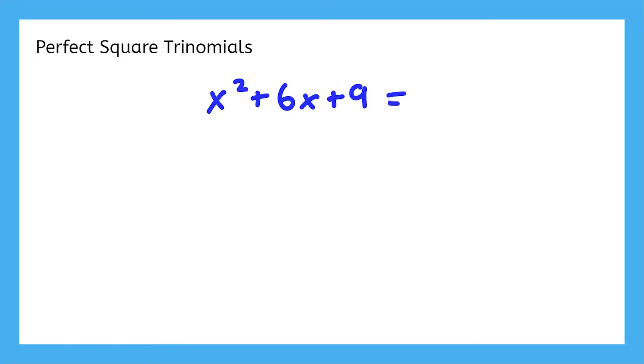Remember in the last unit when we learned about perfect square trinomials and how they could be factored into squared binomials? We're going to be using that same concept here, except this time we'll be taking expressions that are not perfect square trinomials and tacking on whatever's necessary to force them into the right form.